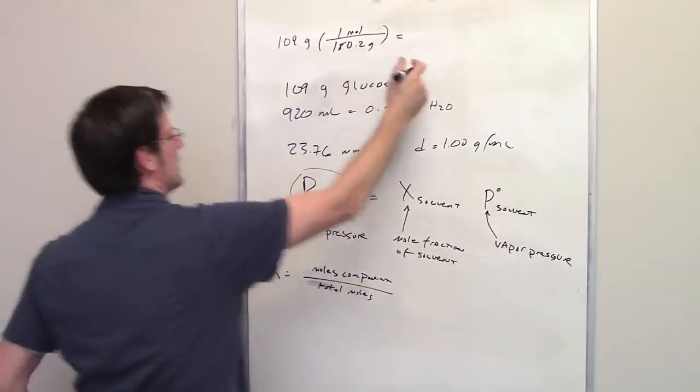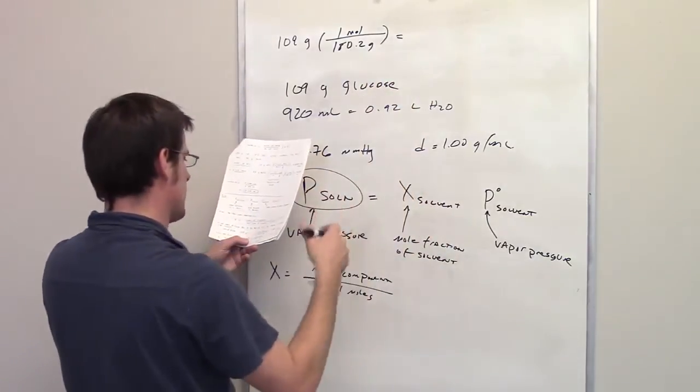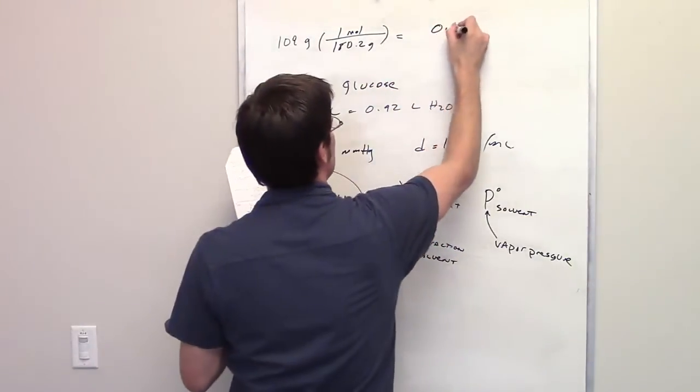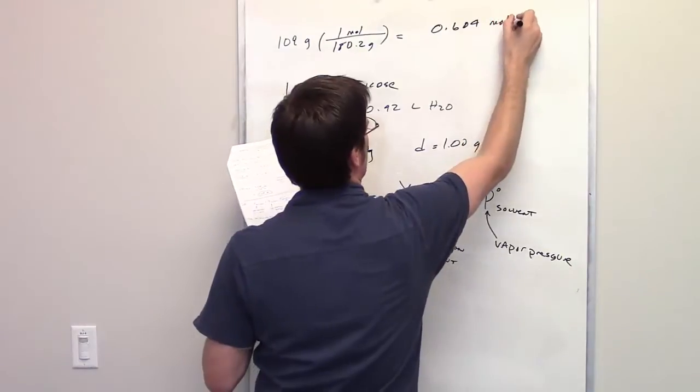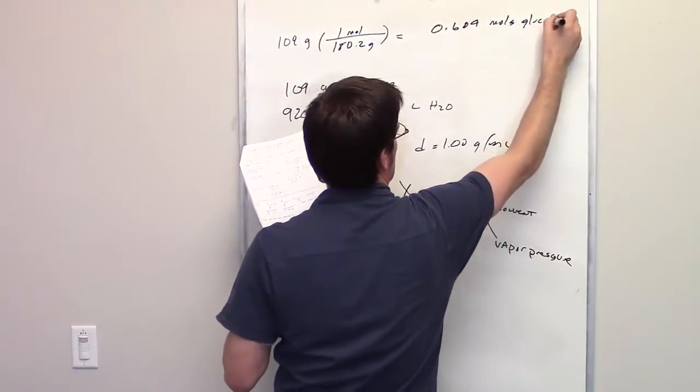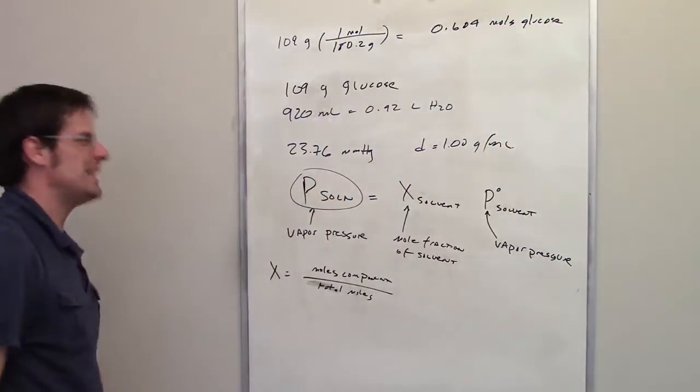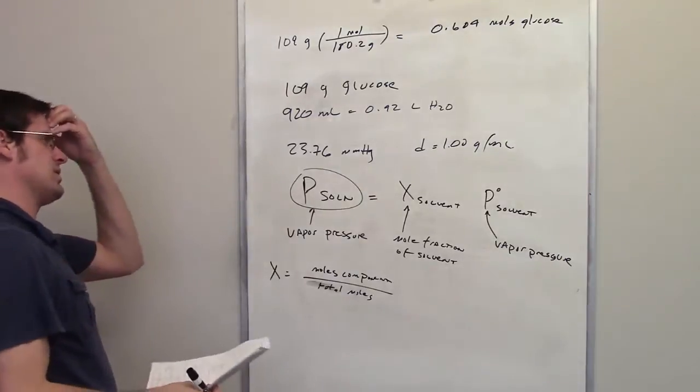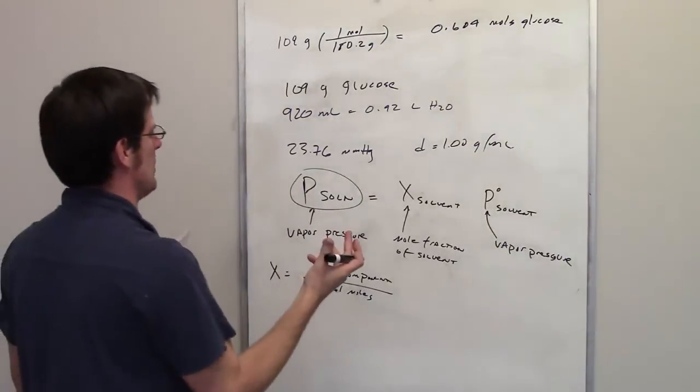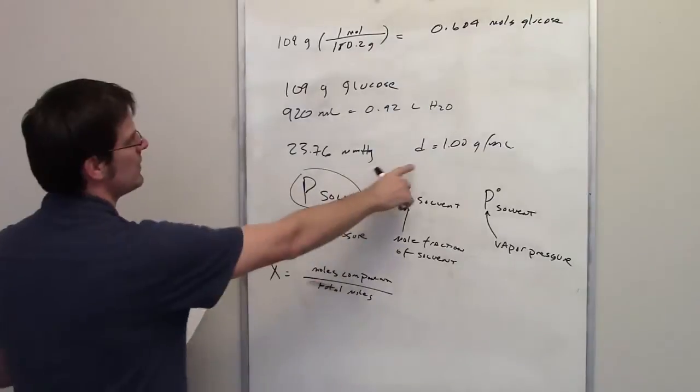The total number of moles of glucose is 0.604 moles. We now have 0.92 liters of water. How many moles is that? You're going to have to use density.